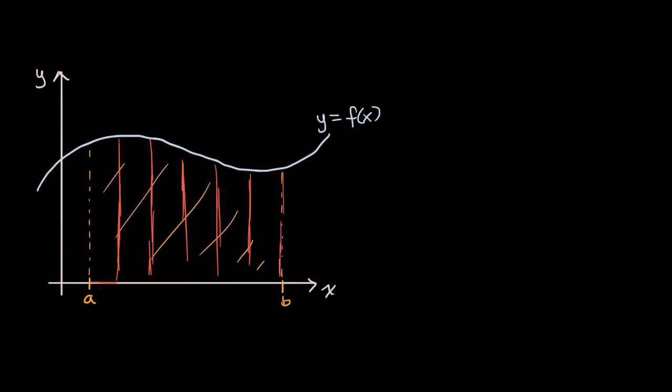And so each of these, this is delta x, let's just call that delta x one, this is delta x two, this width right over here, this is delta x three, all the way to delta x n, I'll try to be general here.